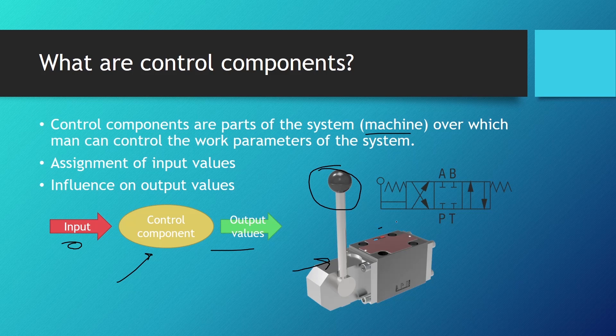This directional control valve has three positions, and the middle one is the off position. If you push this lever to the right, you can activate the first position, giving direction to the fluid flow.